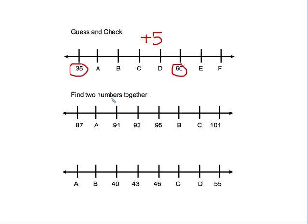You could also find two numbers that are right next to each other and figure out how much they're counting by. For example, right here I know the 91 and the 93 are right next to each other. I could figure out how much I need to add on to go from 91 to 93.